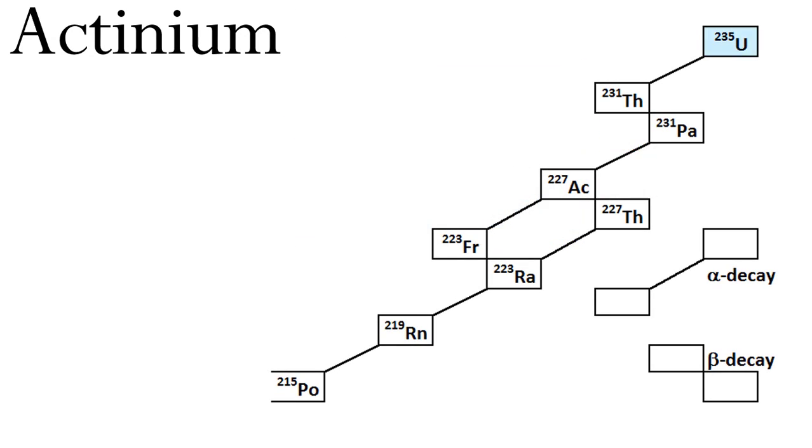Actinium is in the decay chain of Uranium-235, so there are trace amounts of Actinium in the uranium oxide ore pitchblende. By trace amounts, I mean there are about 2 mg of Actinium for every ton of pitchblende. It's easier to make Actinium by neutron irradiation of Radium-226 than it is to extract it.